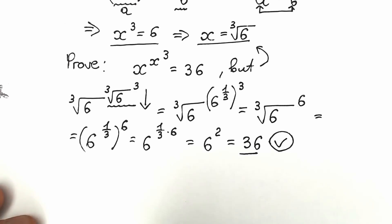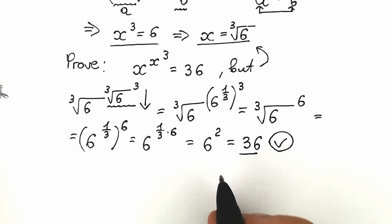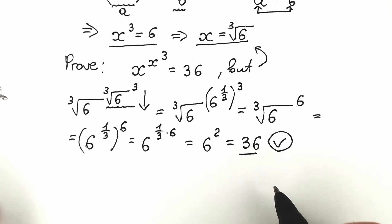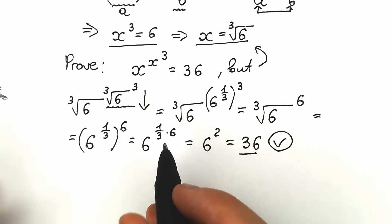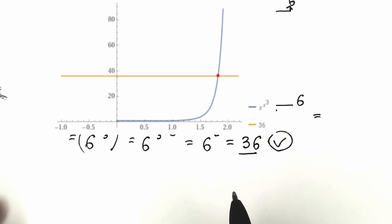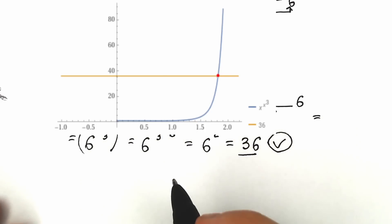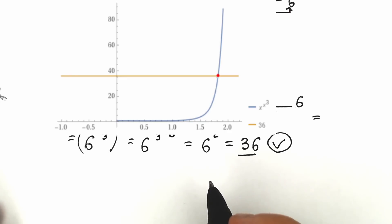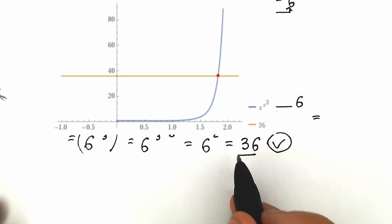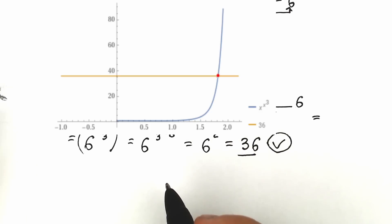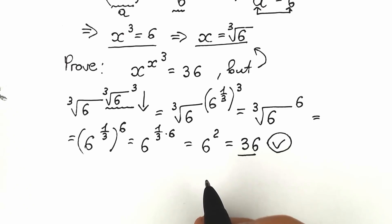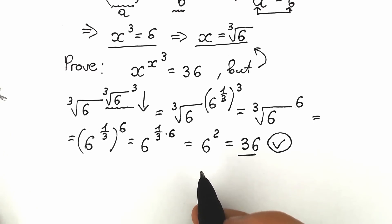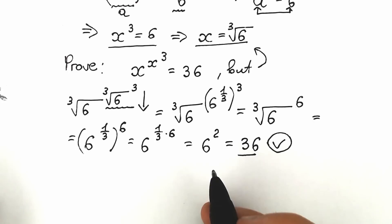Now, for those interested in all real number roots — a lot of students ask whether there are more real roots since we have x cubed. I want to show you a plot of these two graphs: x to the power x to the power 3, and the constant 36. As you can see, there is only one point of intersection, confirming we have only one real root: x equals the cube root of 6. As for complex roots, I'm not certain what happens in terms of infinity, but in terms of real number roots we have only one solution.